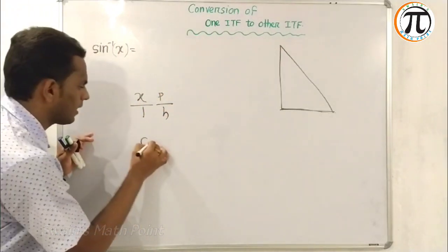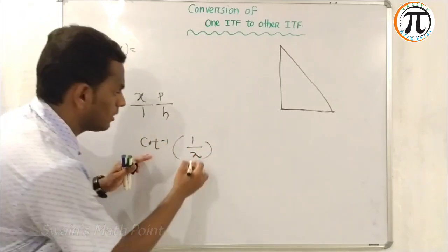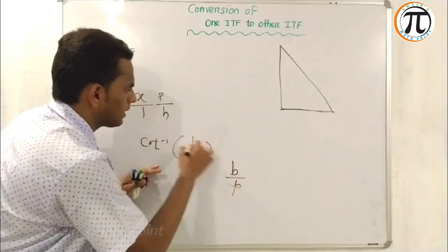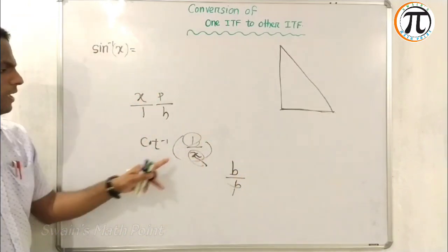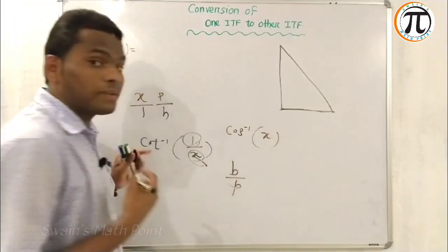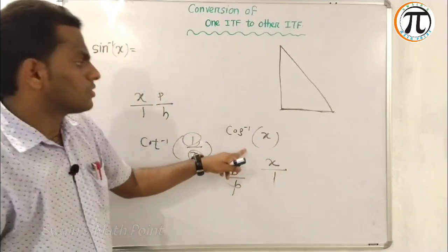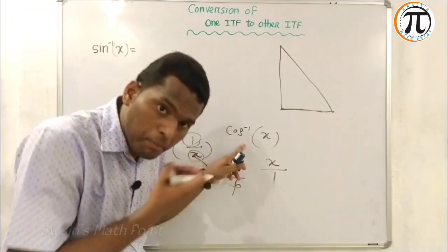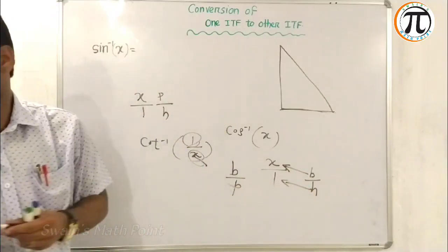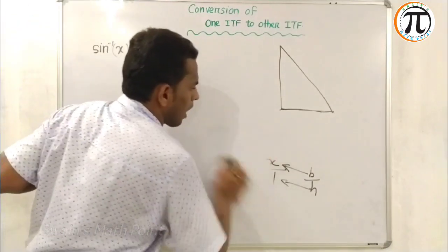If we want to convert to cosine inverse, we use cosine inverse formula B by H. Similarly for other functions. If X equals sine theta, then X by 1, so cosine formula is B by H equals B by 1.